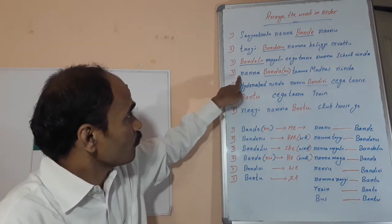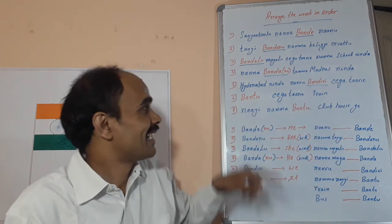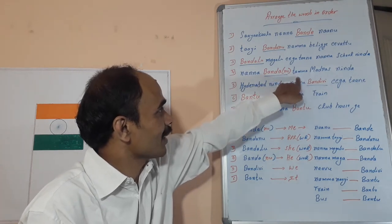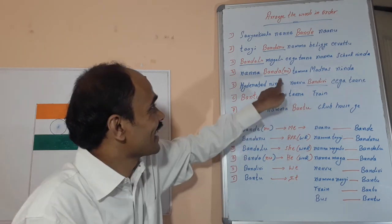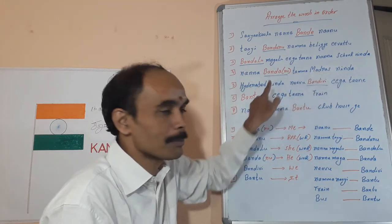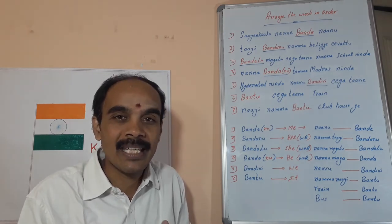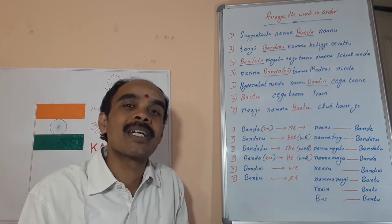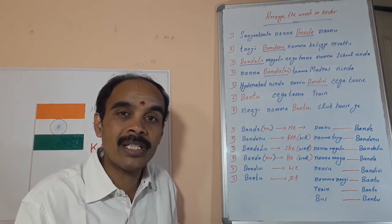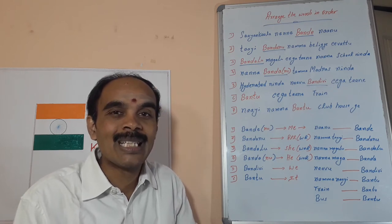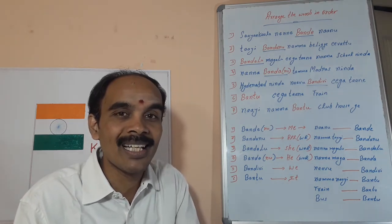The next one is: 'nanna bandha tamma madras ninda.' The answer is: 'nanna tamma madras ninda bandha.' That means 'my younger brother came from Madras.' We can make many more sentences with the help of this assignment sheet — 'nanna tamma hyderabad ninda bandha,' 'nanna tamma delhi ninda bandha,' 'office ninda bandha,' 'apartment ninda bandha.' 'Bandhanu' is the full word; we can also use 'bandha.'